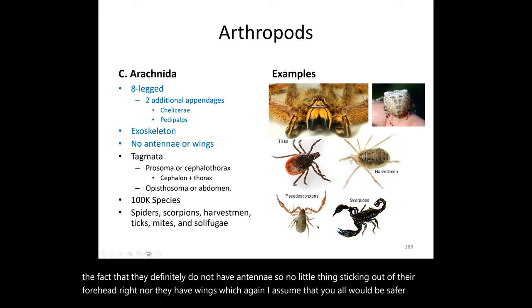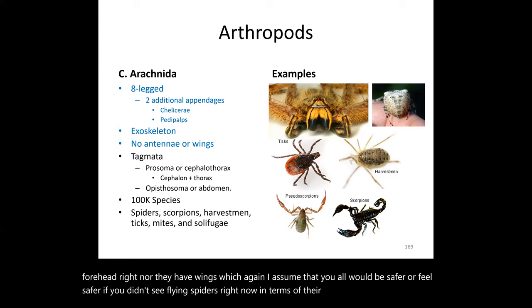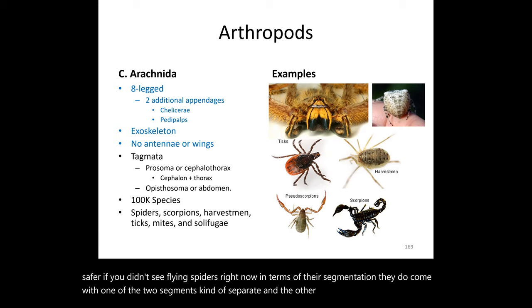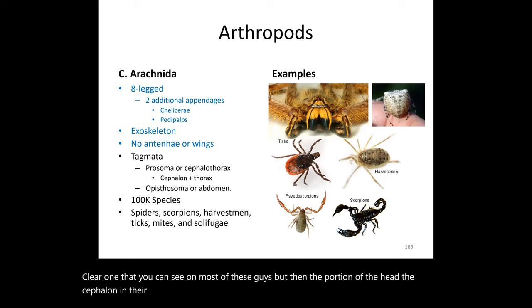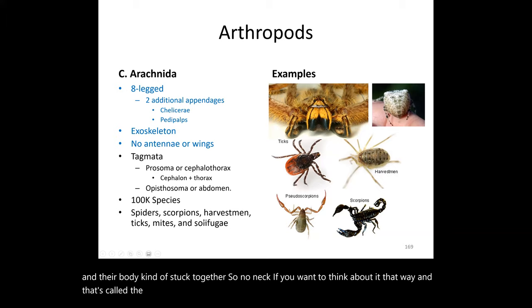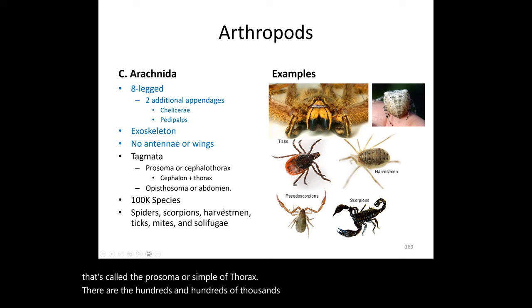In terms of body segmentation, arachnids have one segment separate and two fused together. The abdomen — the part most people recognize — is called the opisthosoma. The head (cephalon) and torso (thorax) are fused together in arachnids, so they effectively have no neck. This fused head-and-body region is called the prosoma or cephalothorax.